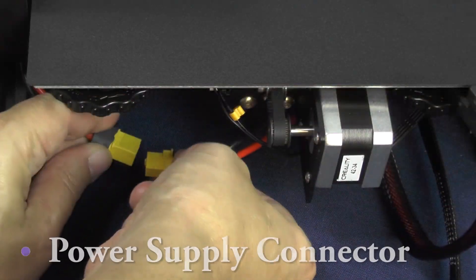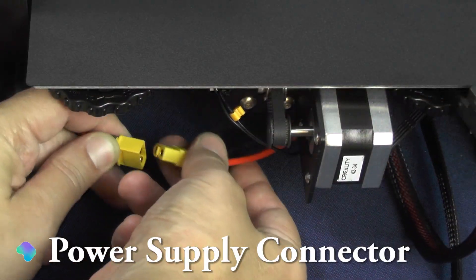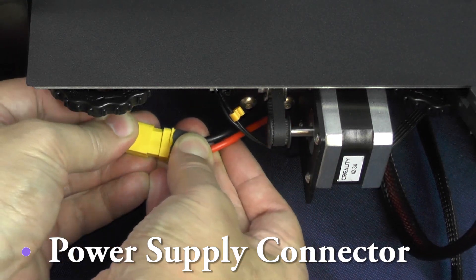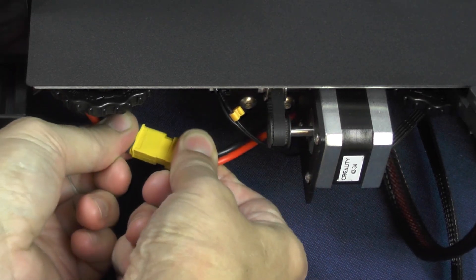Now, we are going behind the printer and put these two yellow connectors together, which are going to establish an electrical connection between the power supply and the motherboard.